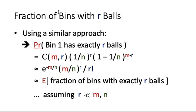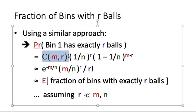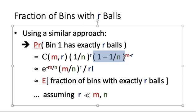Next, let us study a very similar problem. This time, we want to find out what is the fraction of bins that has exactly r balls. We assume that r is some small constant, which is much smaller than m or n. We can find out the probability that bin 1 has exactly r balls. There are m choose r ways to select r balls, and for each particular way, these r balls have to be thrown into bin 1, which happens with probability 1 over n to the power r.